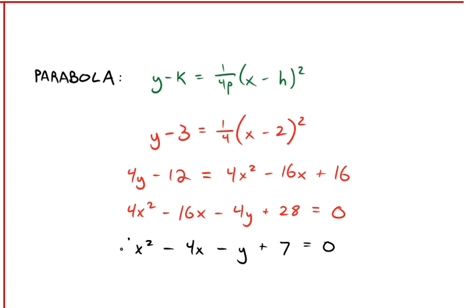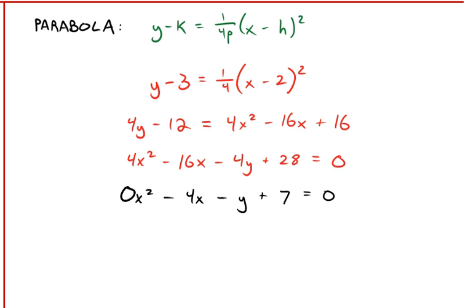At a = 0, 0x², if we were to rewrite this, it would be -4x - y + 7 = 0. That is no longer a parabola. We are down to only x and y. That is actually the line y = -4x + 7. It's a linear equation with slope -4, y-intercept 7.